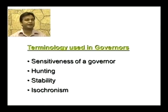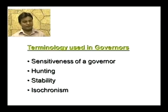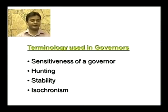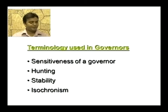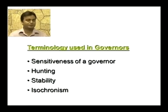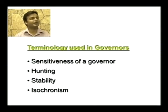Next is hunting. A governor is said to hunt if the speed of the engine fluctuates continuously above and below the mean speed — that is, if the governor speed fluctuates above and below the mean, the governor is said to hunt.